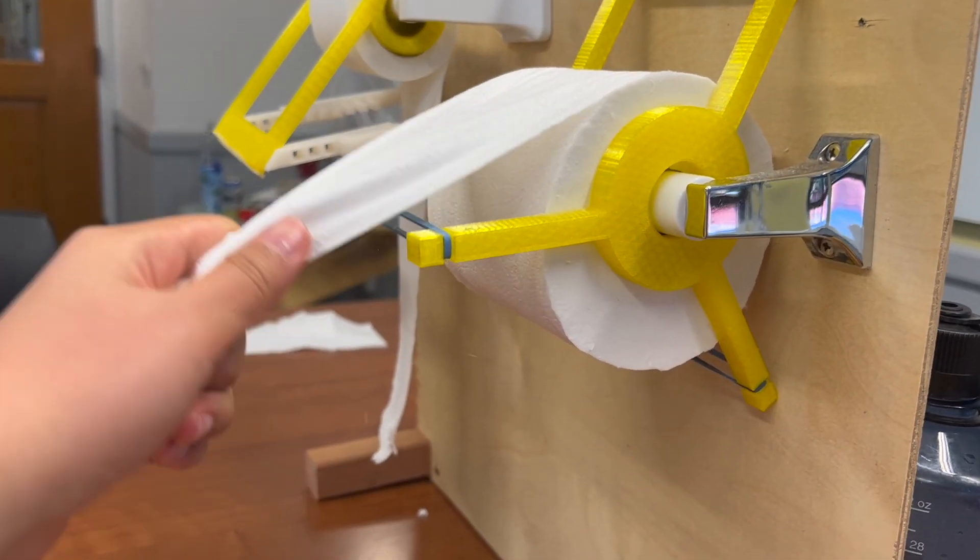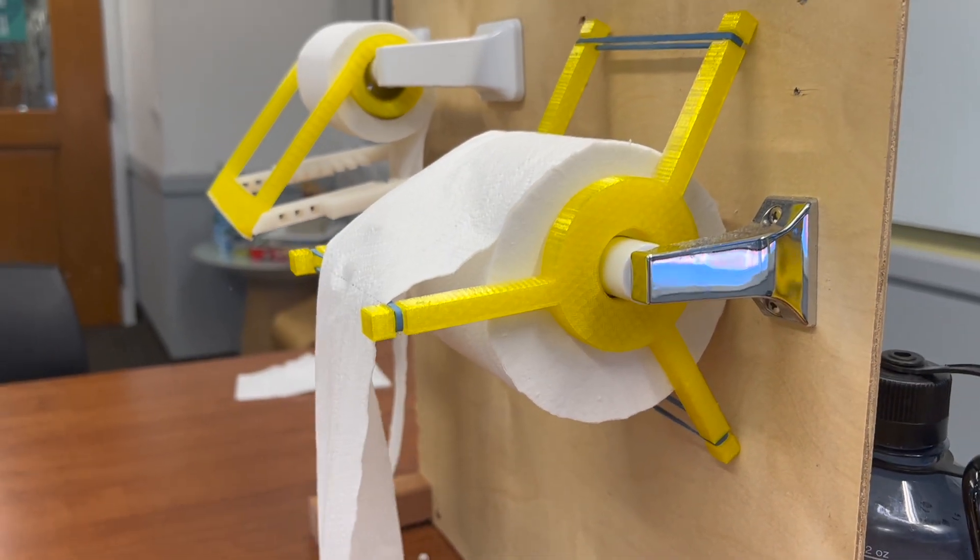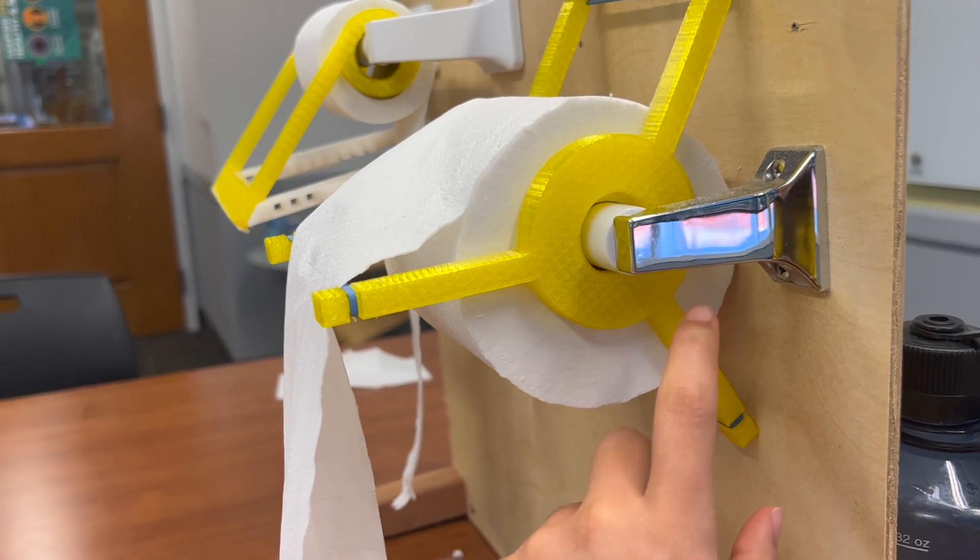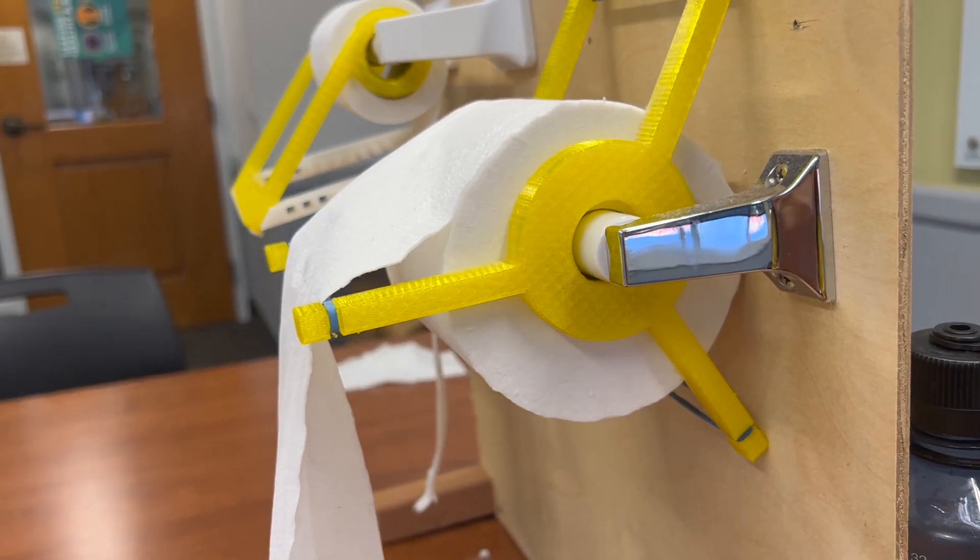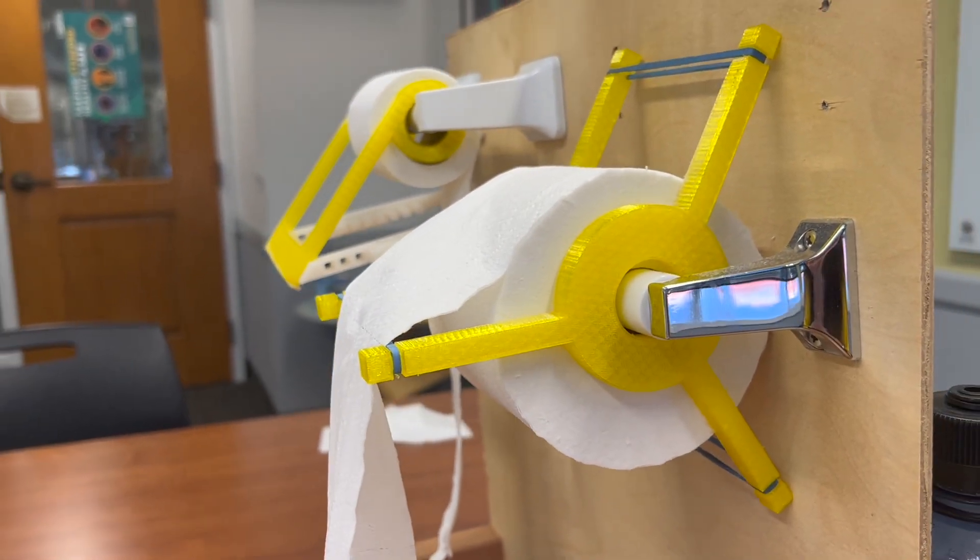Now the idea is as you pull on this, you can see these yellow feet are going to run into the wall. These yellow feet are designed so that no matter how big your toilet paper holder is, they eventually run into the wall.